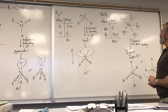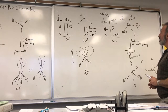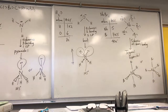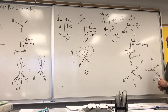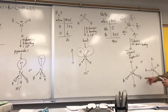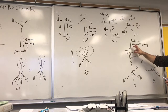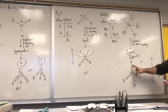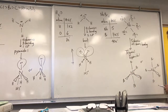Next is niobium pentabromide. Niobium has five valence electrons, bromine has seven, and there are five bromines, so the total of 40 electrons have to be accounted for. The preliminary Lewis structure has five domains, all of them bonding, which suggests trigonal bipyramidal. One bromine atom is drawn up, one down, and three are equatorial. The bond angle between the equatorial bromines is 120°, the bond angle between the axial and equatorial bromines is 90°, and it's 180° between the two axial ones.